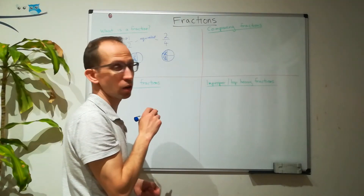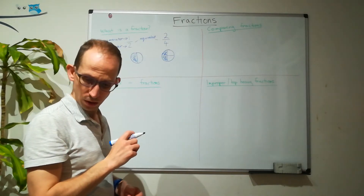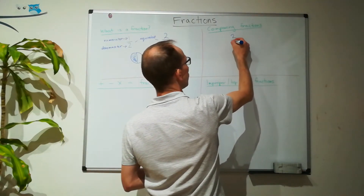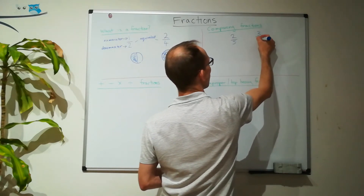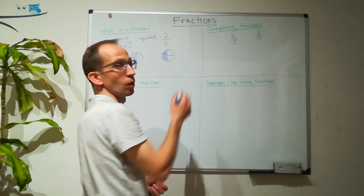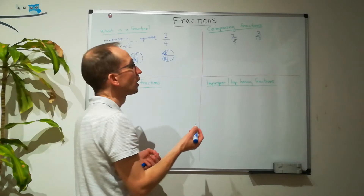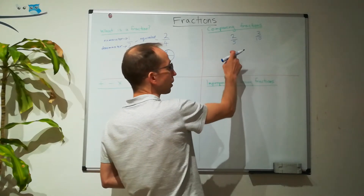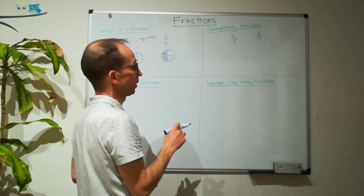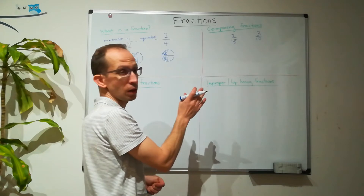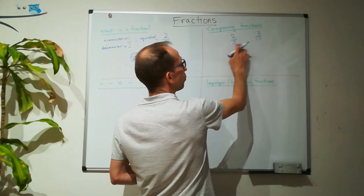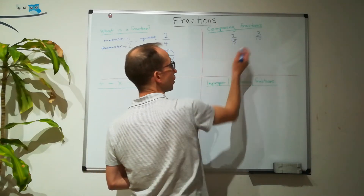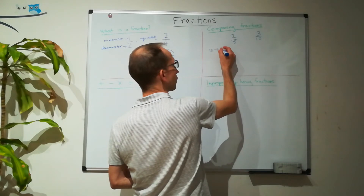Now let's have a look at comparing fractions. If we have two-fifths and three-tenths, which one is greater? If we had two-fifths and three-fifths, it would be clear that three-fifths is greater. But we don't know here because our denominators are different. The key is setting the denominators the same. To compare them, we can see that five goes into ten — ten divided by five is two.